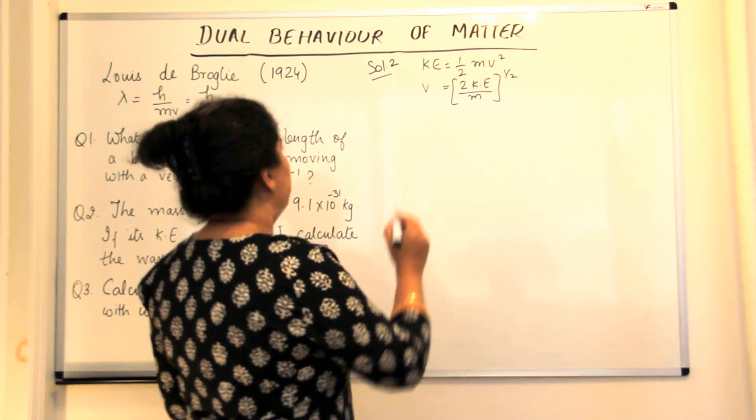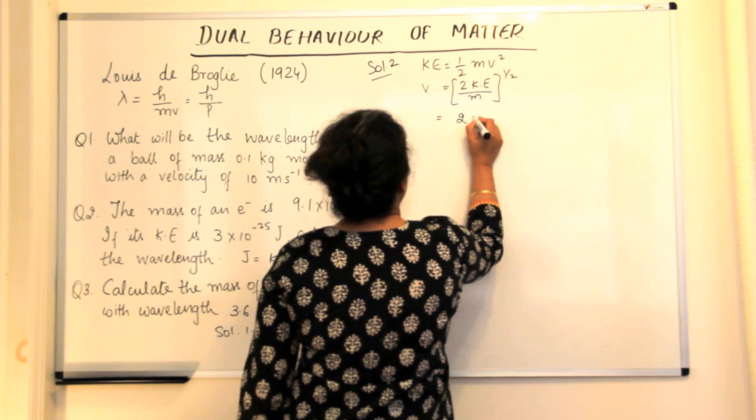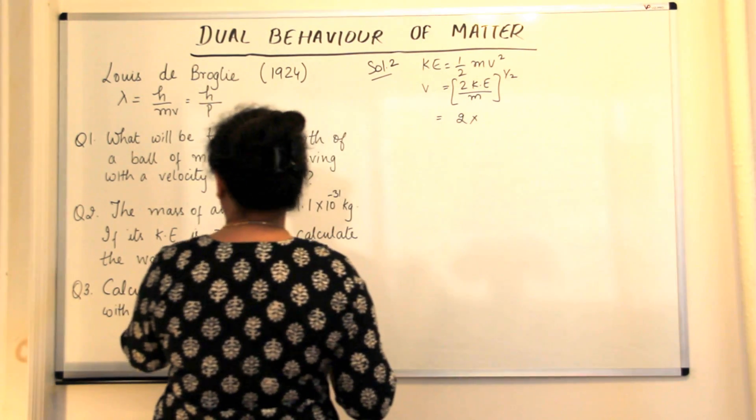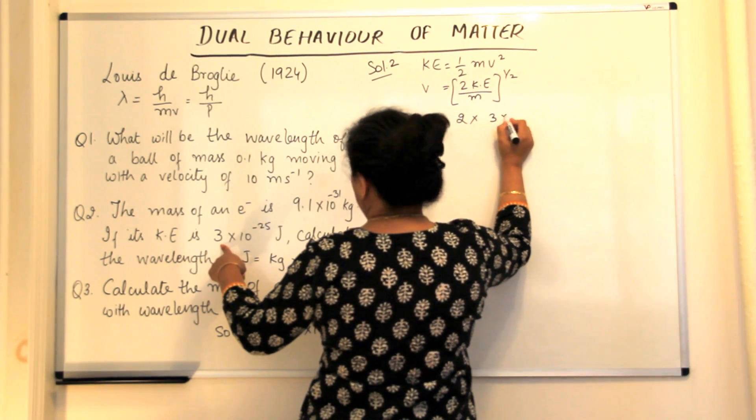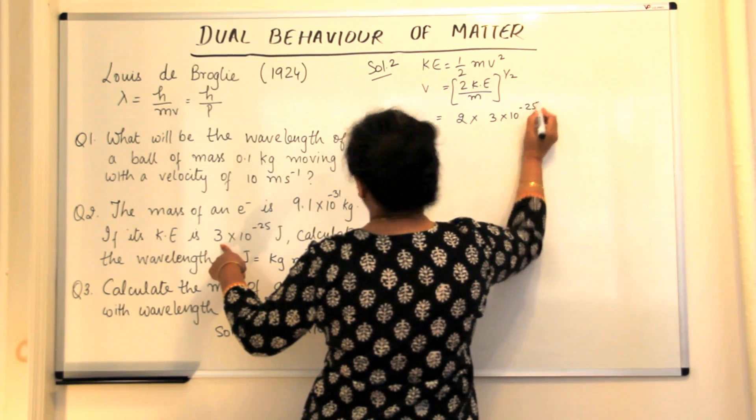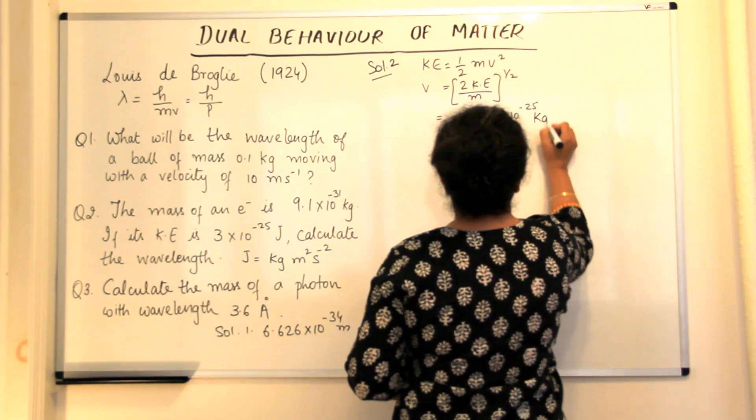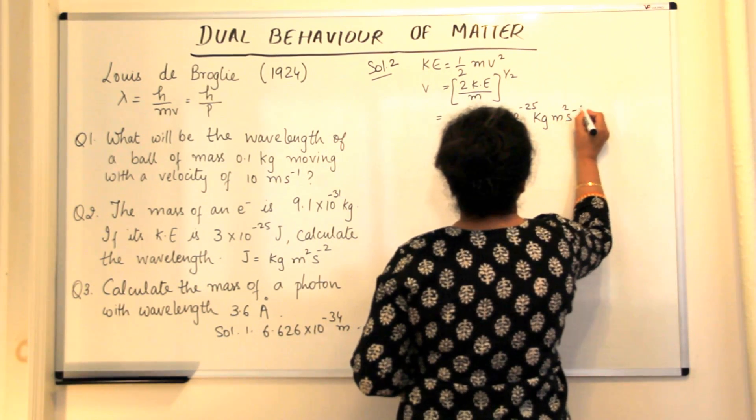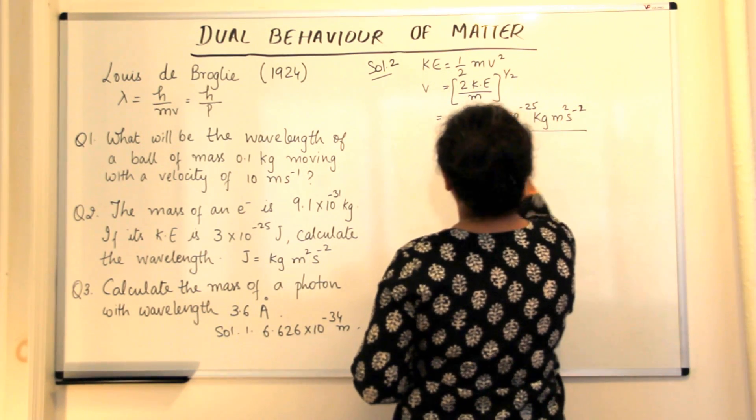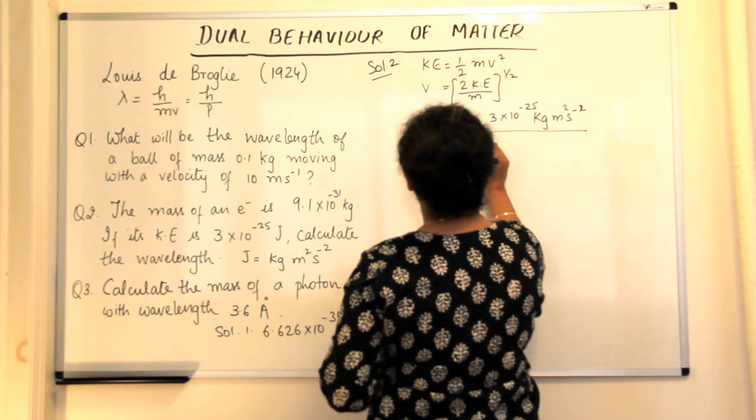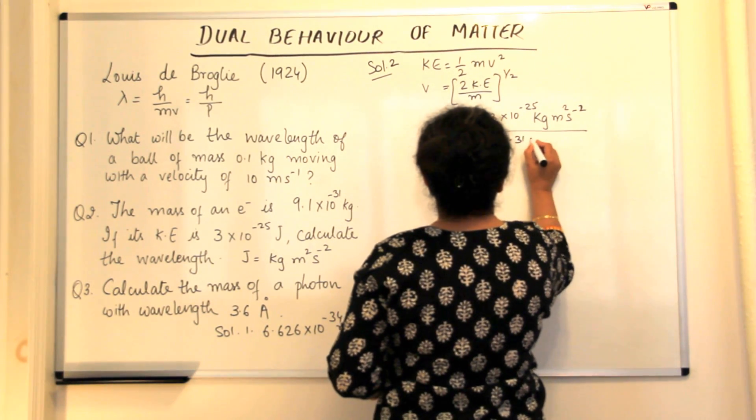Now let us substitute the values to calculate the velocity. Twice kinetic energy given to us is 3 into 10 to the power minus 25 joules. Now joules can be converted into kg meter square second minus 2 divided by mass,